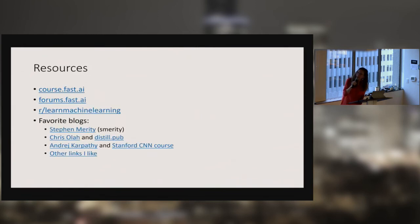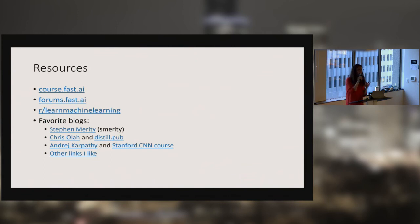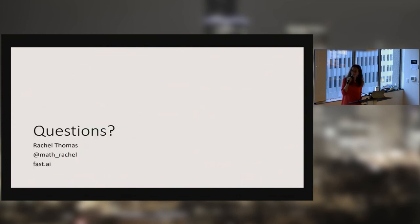I want to leave you with a few resources: our free course and forums, the Learn Machine Learning subreddit. Some of my favorite deep learning blogs are Steven Merity, Chris Olah — he now spearheads distill.pub — and Andrej Karpathy. The Stanford CNN course, which is freely available, is also excellent. I'll tweet a link to these slides, and there's a blog post I wrote that links to about 15 blog posts I like in the area of deep learning. I am at math_Rachel on Twitter and I blog at fast.ai. I also have an 'Ask a Data Scientist' advice column there. Thank you.